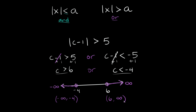To combine these intervals, we put a union symbol between the two: (-∞, -4) ∪ (6, +∞). Remember, whenever we use the word 'or', you should have two separate graphs on your number line with a gap in between — that confirms we graphed this correctly.